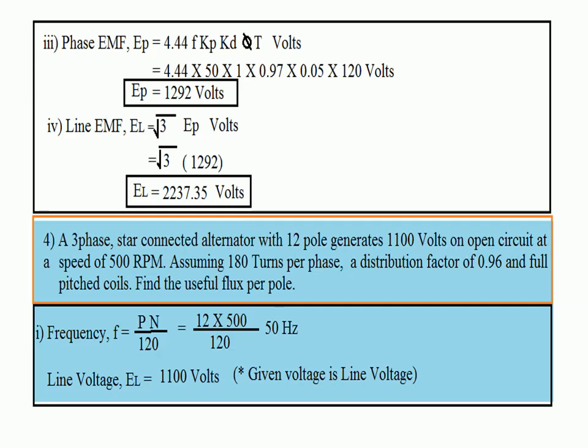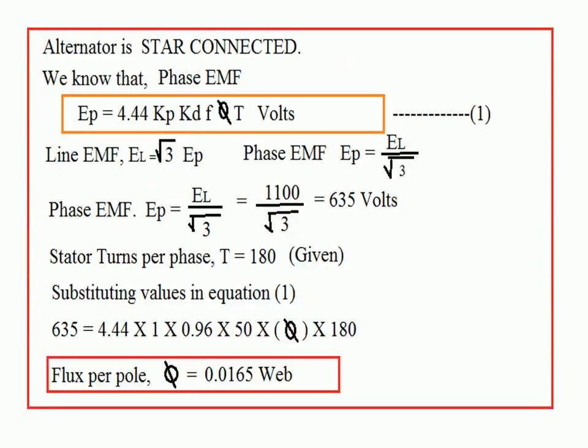First calculate frequency: F = PN/120 = 12 × 500 / 120 = 50 Hz. The given voltage is 1100 volts — this is line voltage. Alternators are always star connected, so convert line voltage to phase voltage: Ep = 1100 / √3 = 635 volts. You must be very careful to substitute phase EMF, not line EMF, in the expression.